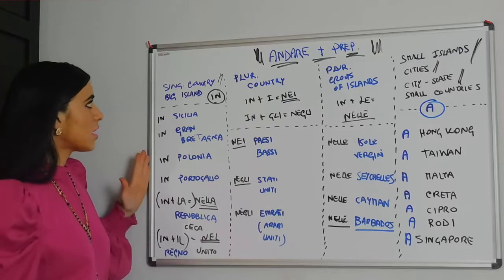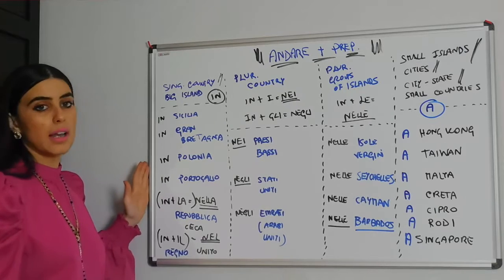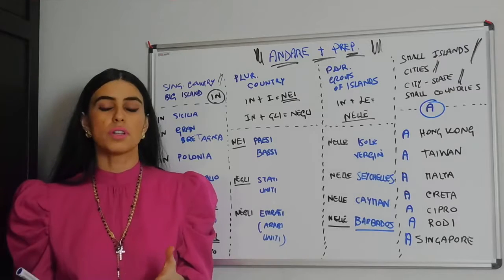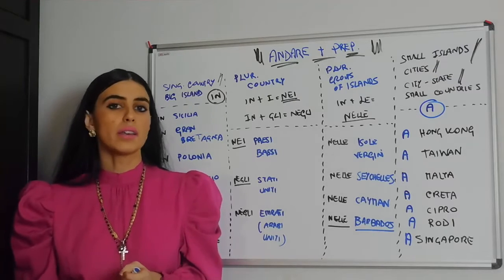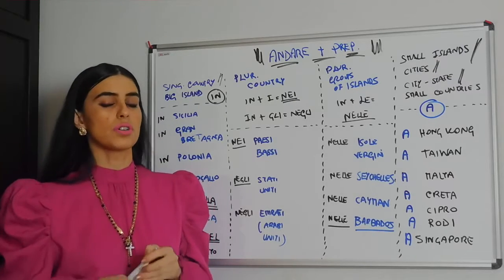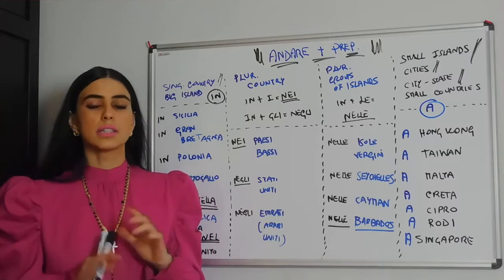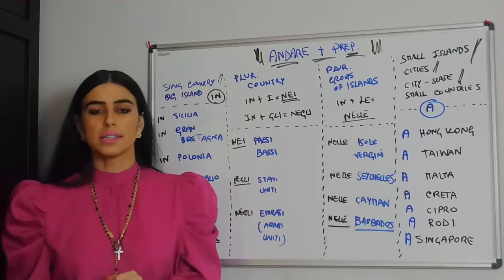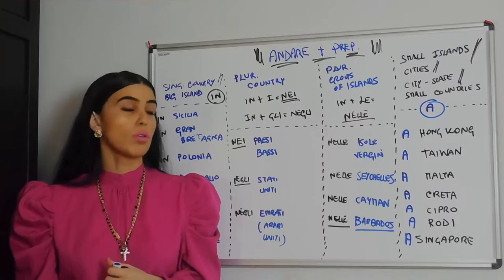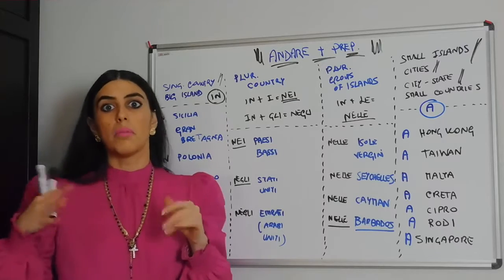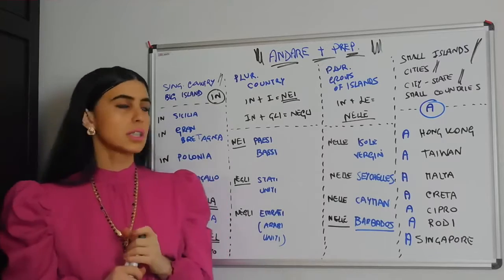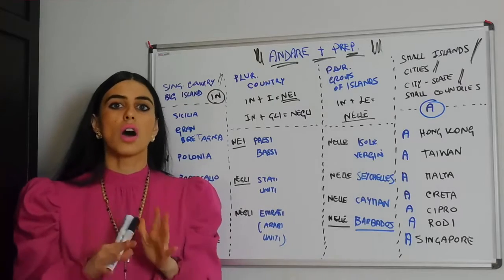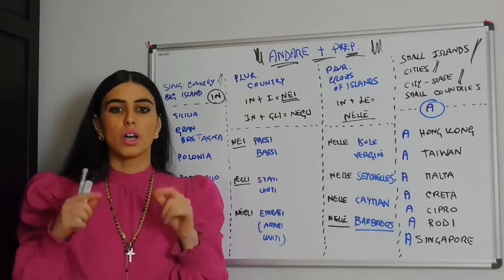Let's start from singular countries and big islands. Singular countries just means regular countries that are singular. How do you know which countries are singular and which are plural? This is very simple. In English, if a country is plural, you would put 'the' before it. Singular countries are countries that do not have 'the' in English.